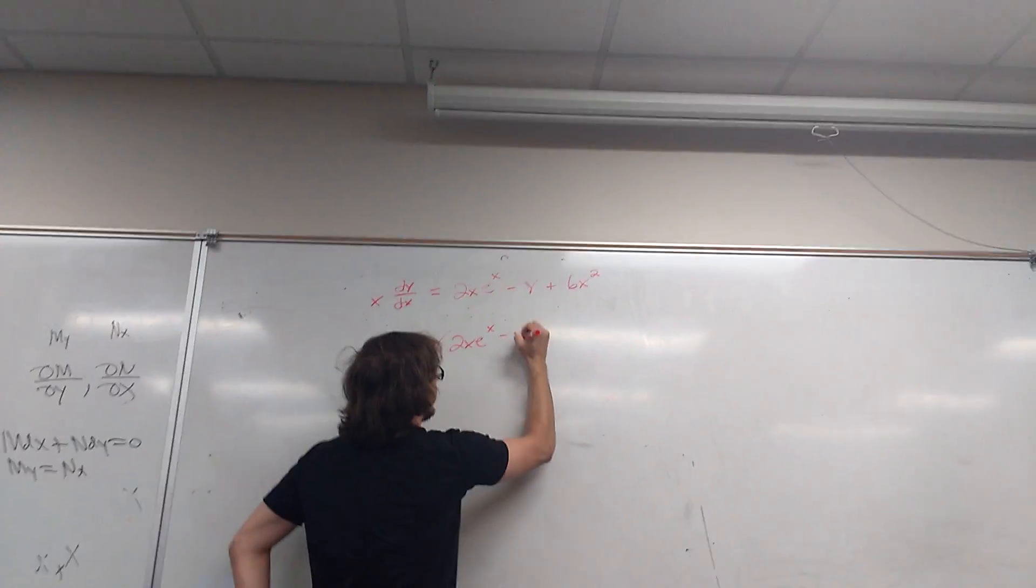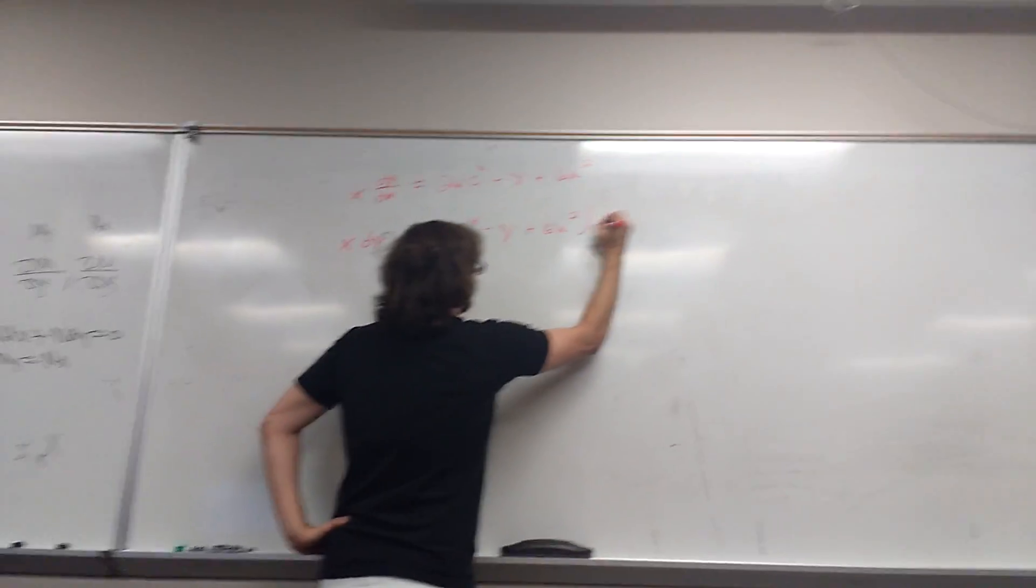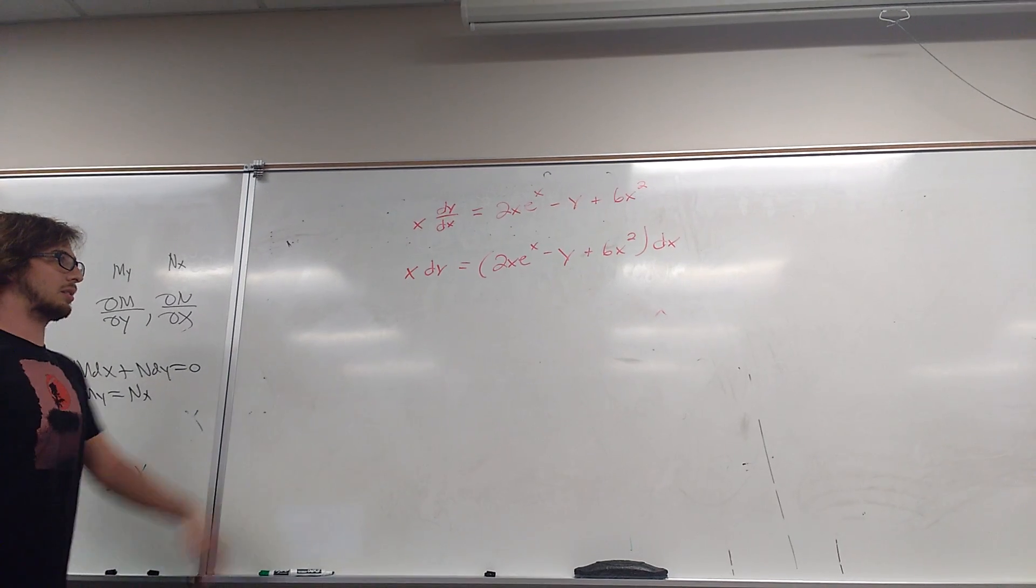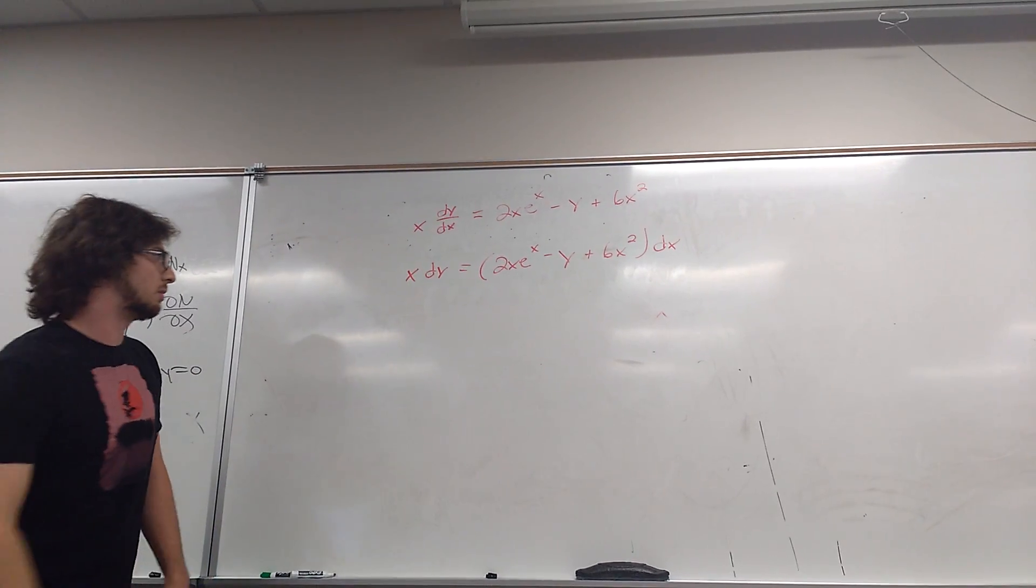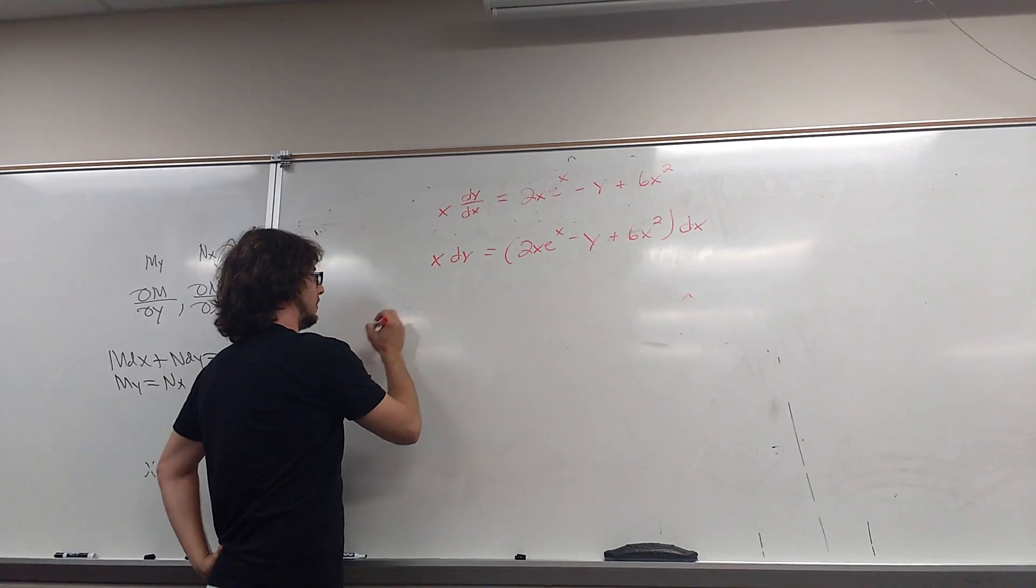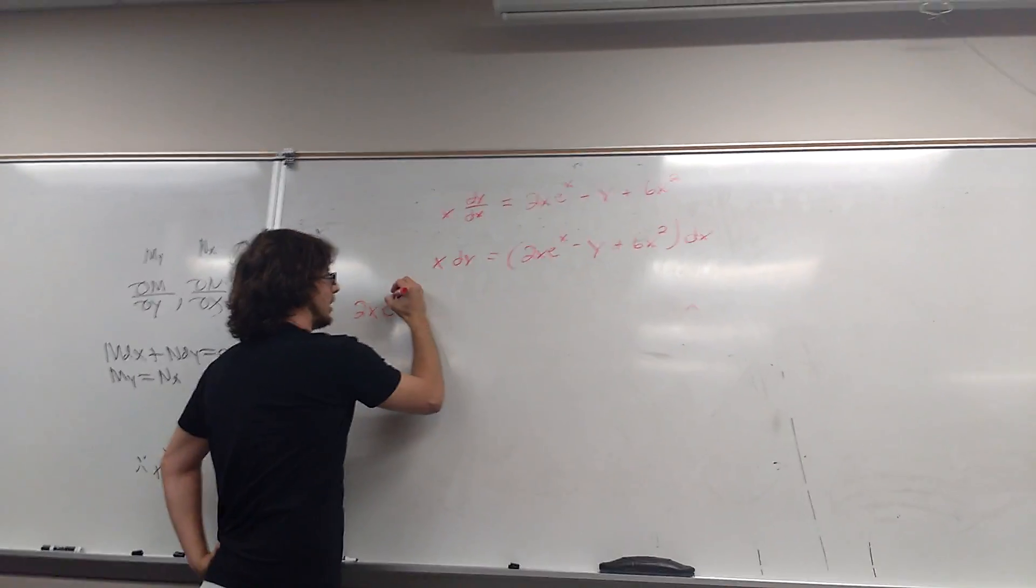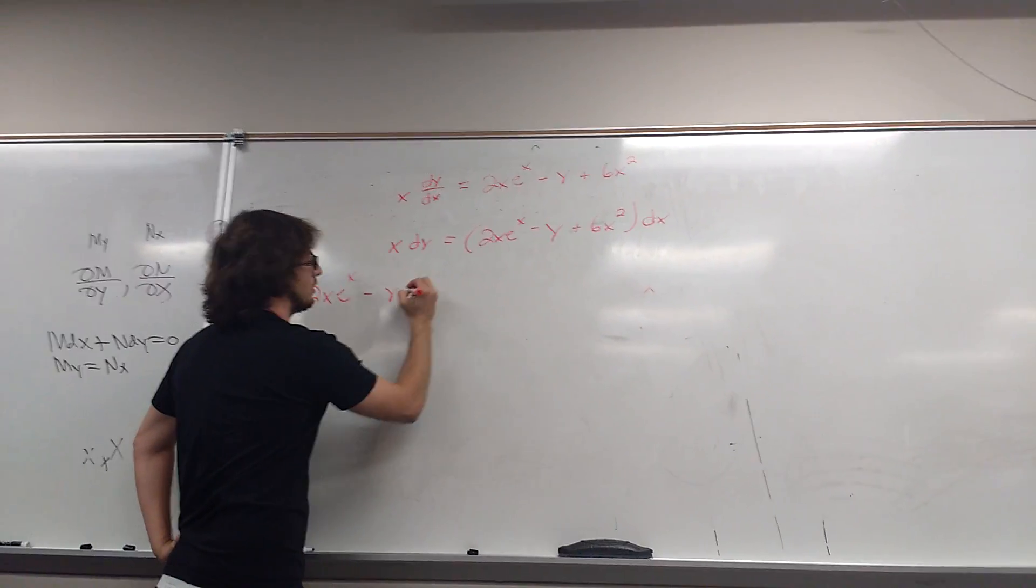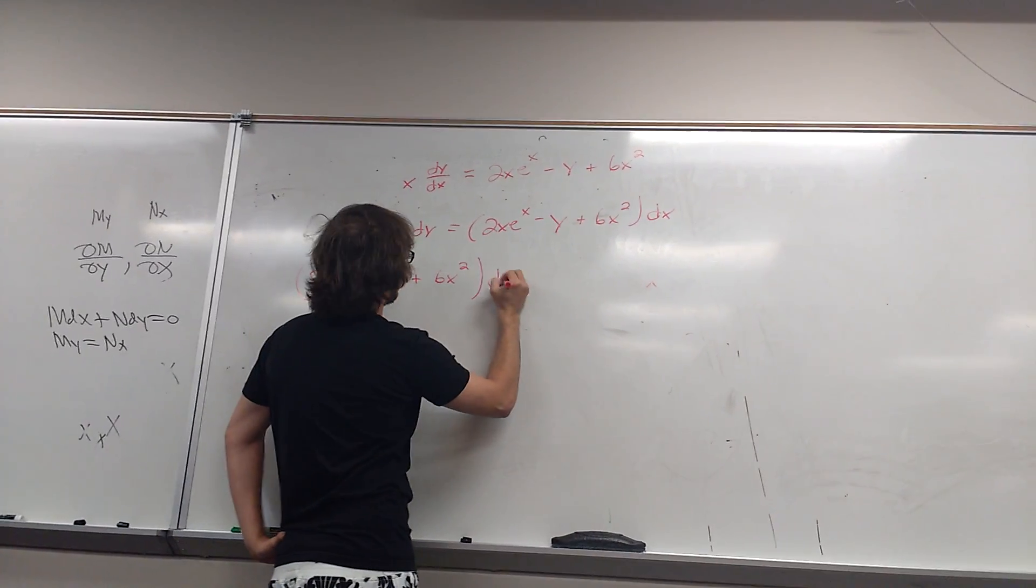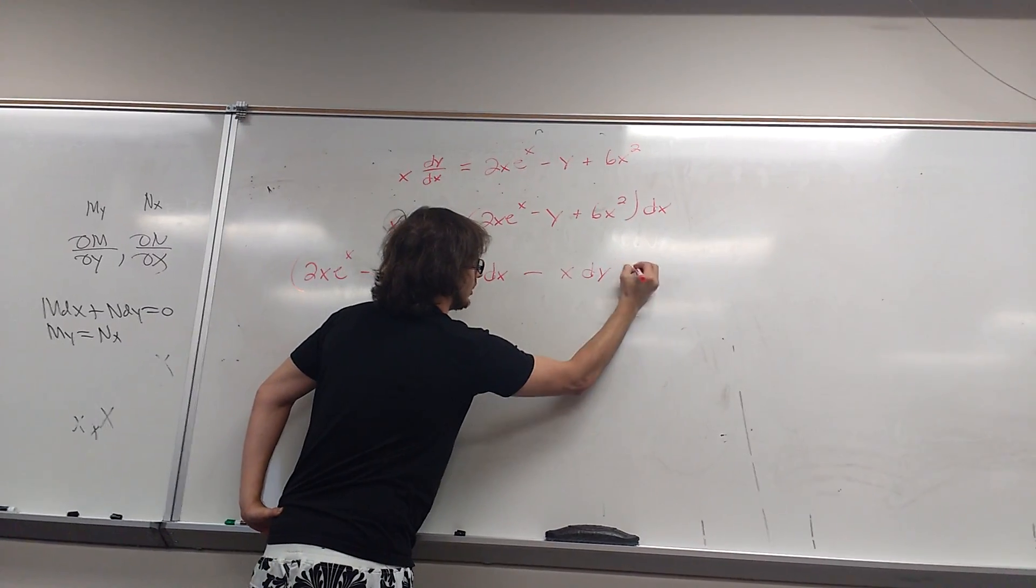2x e to the x minus y plus 6x squared dx. And then let's go ahead and subtract it over and set it equal to zero. Let's just go ahead and subtract the x dy over there. So let me get 2x e to the x minus y plus 6x squared dx minus x dy is equal to zero.